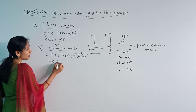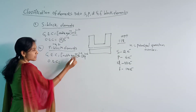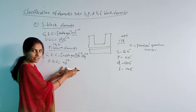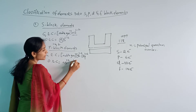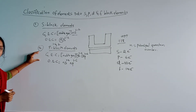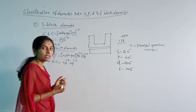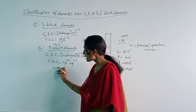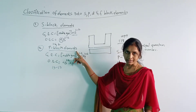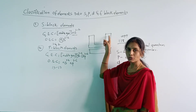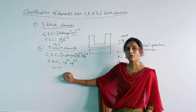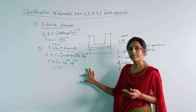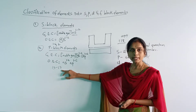The outermost electronic configuration of P block elements is ns¹⁻² np¹⁻⁶, excluding the noble gas. The elements of group 13 to 18 are termed as P block elements. These are called representative elements, which are highly reactive in nature and possess various types of properties.